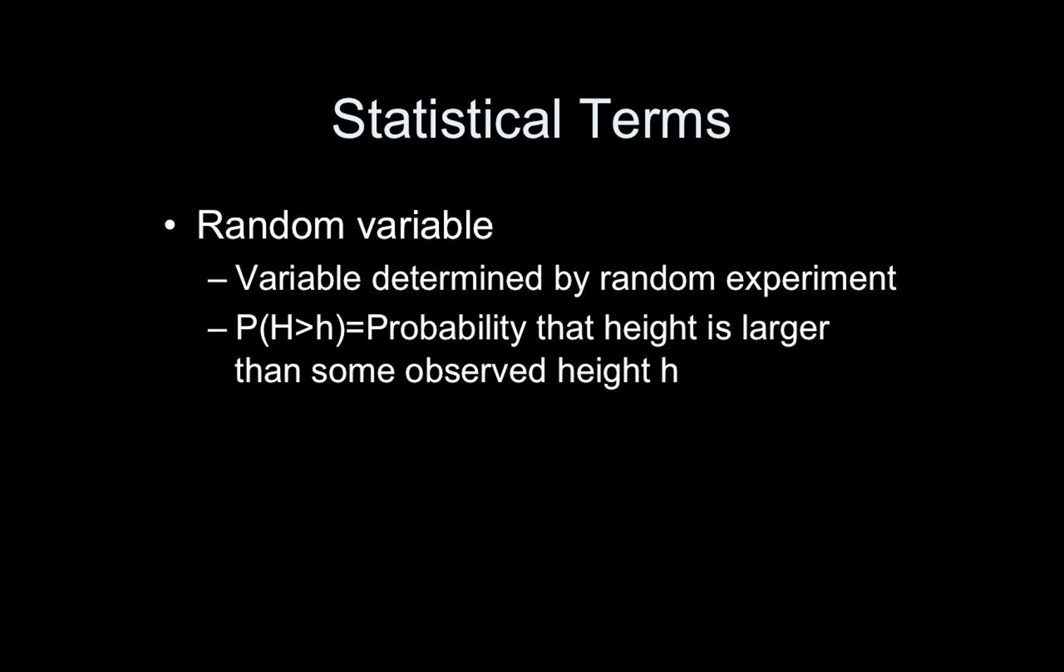So statistical terms. Random variable. And this is simply a variable determined by random experiment. So as I showed in the previous example, height was the random variable, and I can compute the probability that a given height is larger than some observed height, h.